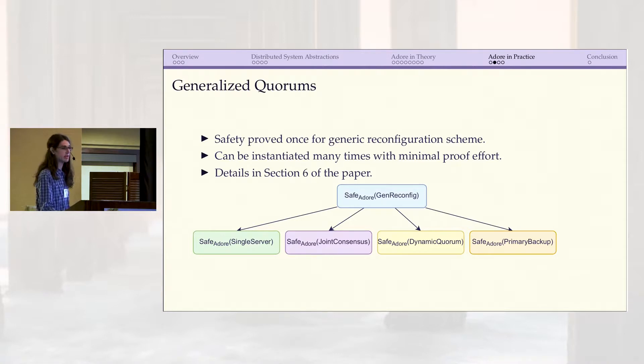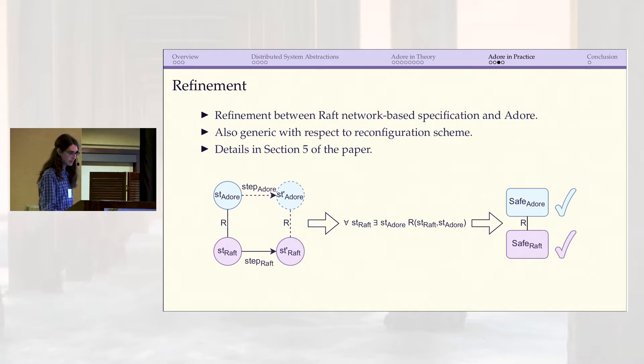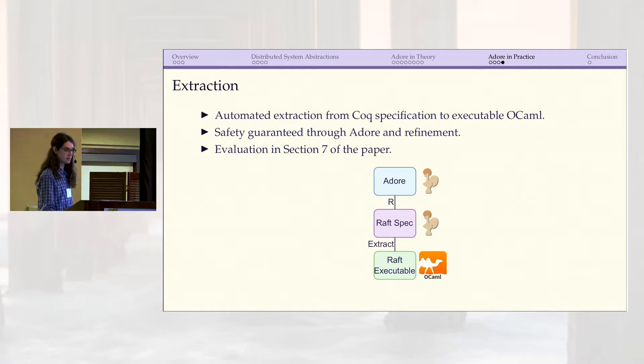In addition to this safety proof, there are some other exciting contributions that I only have time to briefly touch on here, but you can find more details in the paper. One of these is the reconfiguration scheme we use is actually quite general, because we realized all you really need for the scheme to guarantee is that consecutive quorums overlap, and there are lots of implementations that can do that. So we can perform the safety proof once and for all with a very generalized parameterized version of this scheme and then instantiate it and get many variants of the safety proof almost for free. Then, now that we have this generic safety proof, you might still be wondering what this means about the safety of a concrete protocol like Paxos or Raft. For that we can use refinement to show that Adore's safety implies Raft safety, and this is also generic with respect to that reconfiguration scheme. And finally, we can use Coq's support for extraction to OCaml to produce verified executable versions of these protocols, so that really shows that this isn't just an abstract model for verification—we can produce practical systems as well.